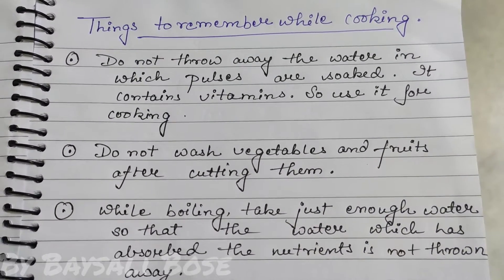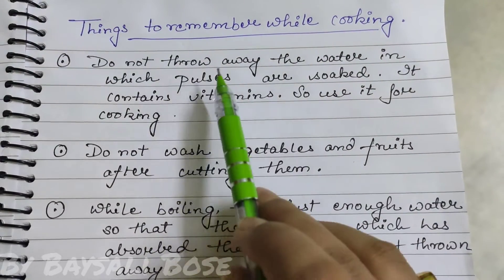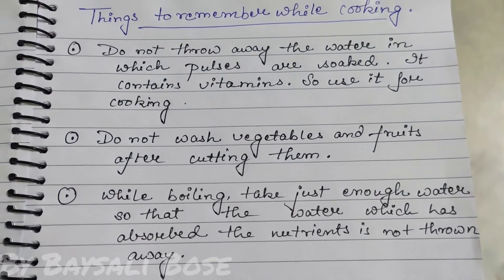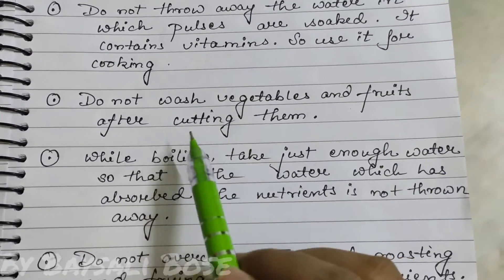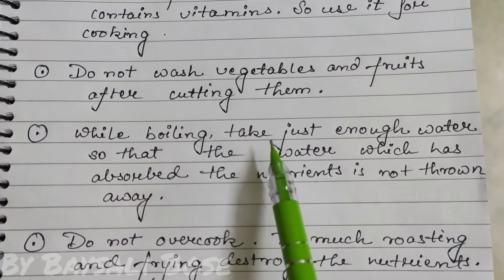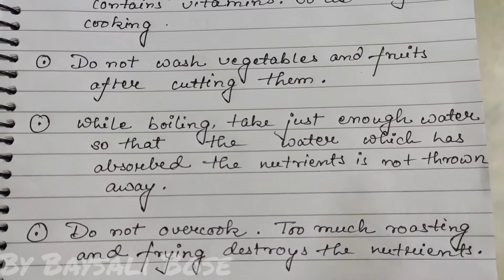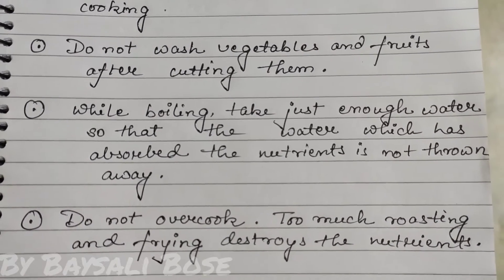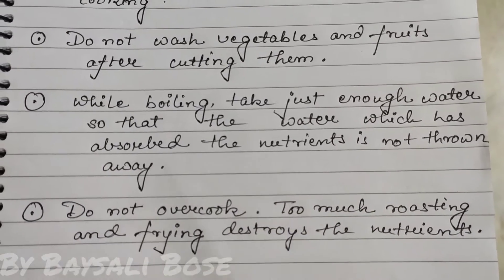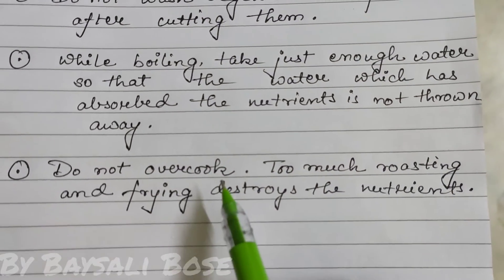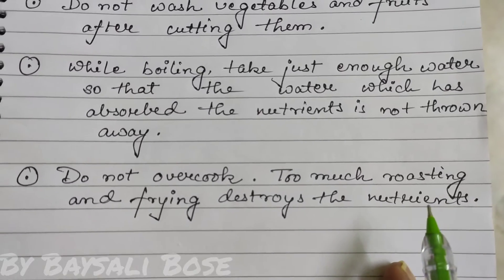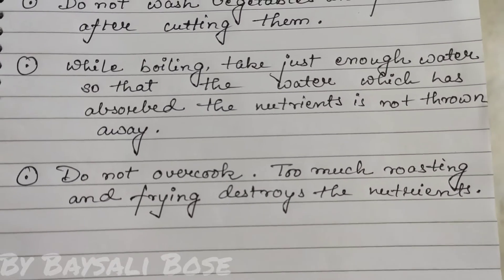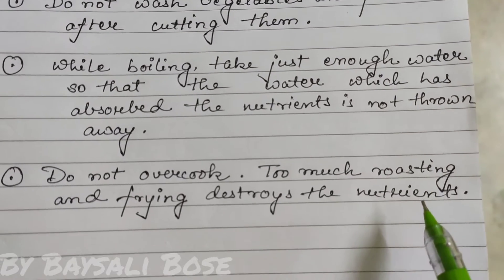While cooking food, do not throw away the water in which pulses are soaked — it contains vitamins and can be used again for cooking. Do not wash vegetables and fruits after cutting them. While boiling, use just enough water so that nutrients are not thrown away. Do not overcook — too much roasting and frying destroys nutrients.